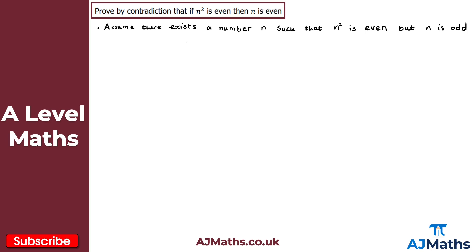If n is odd, we can express it in the form n equals 2m plus 1, where m belongs to the integers. It doesn't matter which letter you use — k is another common choice, I prefer m. Now let's consider what we get for n squared. If n is odd, will n squared be even or odd?